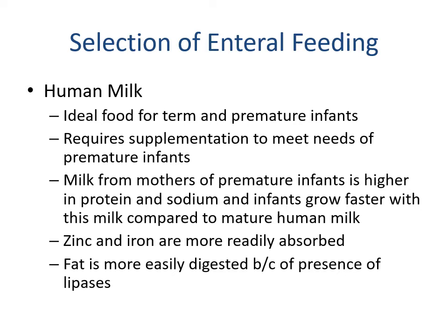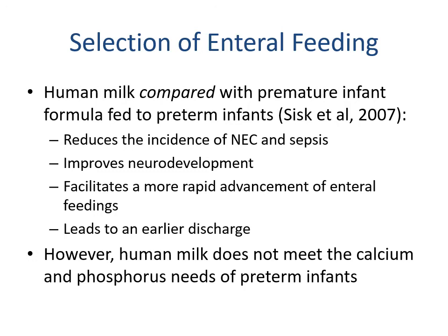Mom's body adjusts as much as it can, but we help supplement beyond that. Zinc and iron are more readily absorbed from breast milk, and fat is more easily digested due to the presence of lipases. Compared with premature infant formula, human milk reduces the incidence of necrotizing enterocolitis and sepsis, improves neurodevelopment, facilitates more rapid advancement of enteral feeds, and leads to earlier discharge. However, human milk does not meet the calcium and phosphorus needs of preterm infants, so we supplement these micronutrients.